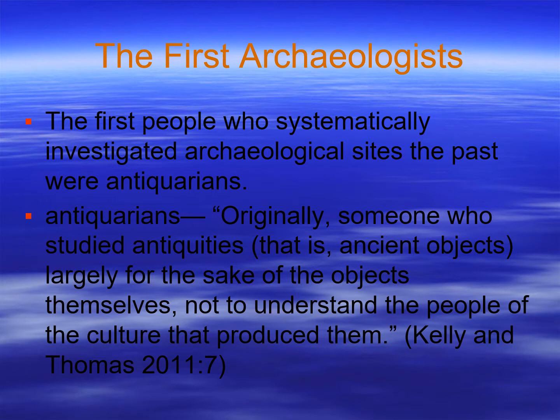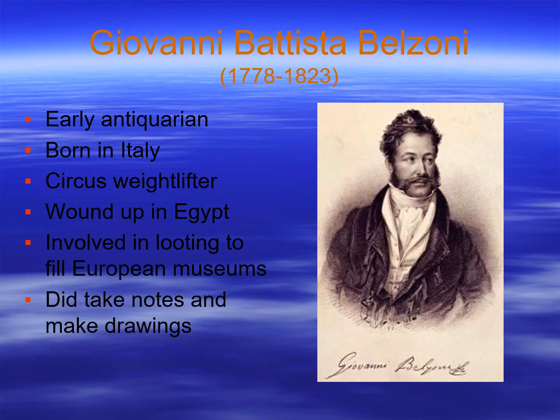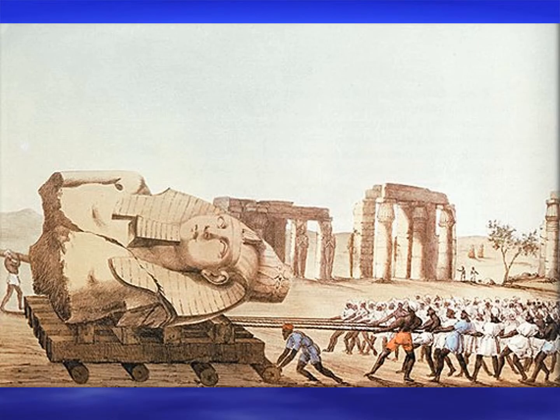The first people to systematically investigate archaeological sites were antiquarians — defined by Kelly and Thomas as someone who studied antiquities, ancient objects, largely for the sake of the objects themselves, and not to understand the people or culture that produced them. One of my favorites is Giovanni Belzoni, an early antiquarian. He was a circus weightlifter born in Italy who wound up in Egypt. He did a lot of looting to fill museums in Europe, but did take notes and make drawings and accumulated a lot of firsts. Here's a picture of one of his projects retrieving part of one of the great statues of Ramses II.